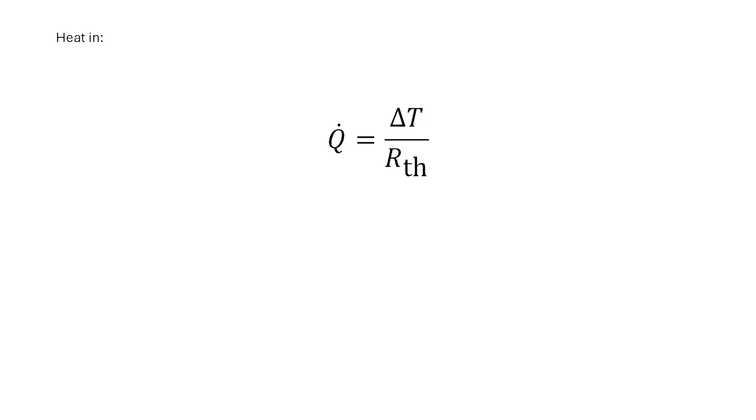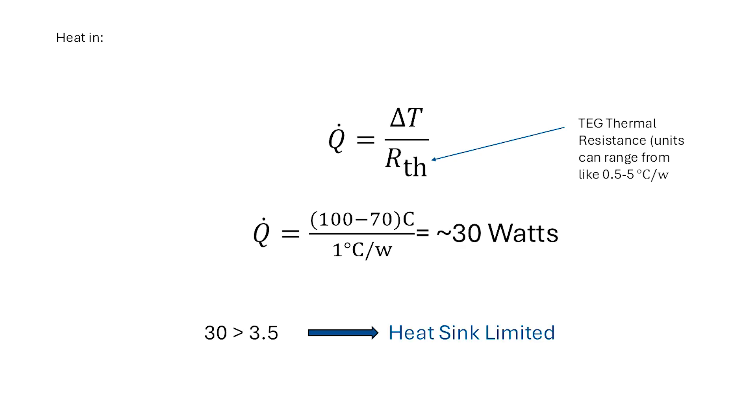To check the bottleneck, we can estimate the heat in with the following equation, where delta T is the difference between the hot end and the cold end, and R_TH is the thermal resistance of our module. And while I couldn't find a specific spec sheet for the module I was using, I just estimated it to be around 1 degree centigrade per watt based on the range I've seen on other modules. Which, even if the estimate's off, we can still see that there's more heat coming in than there is heat going out, meaning we're bottlenecked by the heatsink.